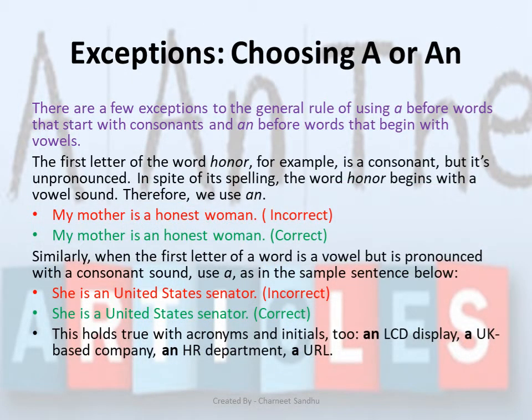There are some exceptions while choosing 'a' or 'an'. The first letter of the word 'honor', for example, is a consonant but it is unpronounced. In spite of its spelling, the word 'honor' begins with a vowel sound, and therefore we use 'an'. For example: 'My mother is an honest woman.'